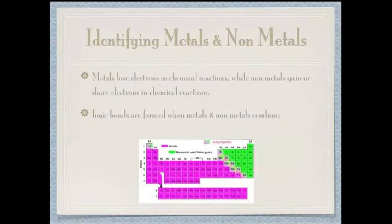Metals lose electrons in chemical reactions, while non-metals gain or share electrons in chemical reactions. Ionic bonds are formed when metals and non-metals combine.